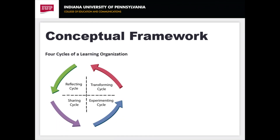The action plan is best represented by four cycles that are dynamic, interactive, and concurrent. An individual can enter the process at any given cycle. The reflection cycle involves constant data collection and ongoing evaluation, with reflection and open dialogue to identify our strengths and weaknesses. The sharing cycle involves gathering and sharing diversity-related resources, providing a wide range of activities that support the meaningful exchange of ideas with respect to diversity and inclusion.